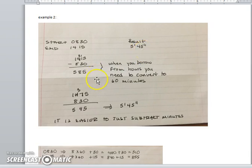But when I borrow, if I borrow like we normally would from the tens, that's not going to work because we are actually borrowing from hours, and when you need to borrow from hours you have to convert it to 60 minutes.